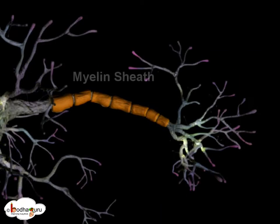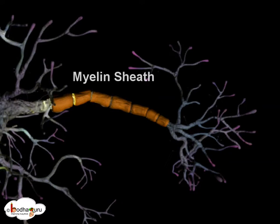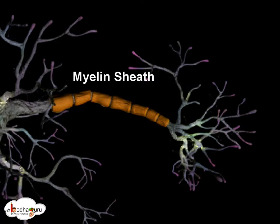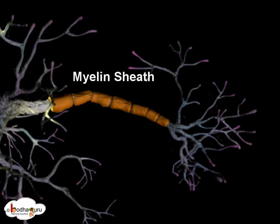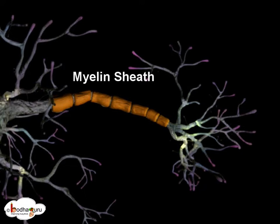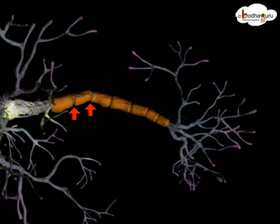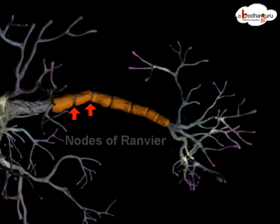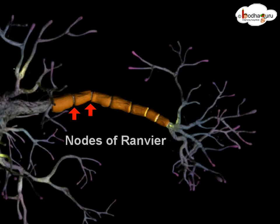Many neurons have insulating sheets of myelin around their axons, but the sheath is not continuous. The gaps are called nodes of Ranvier.